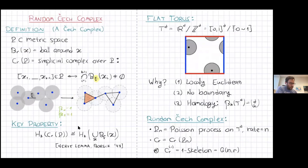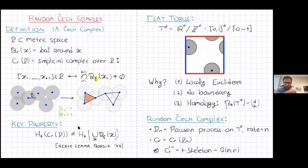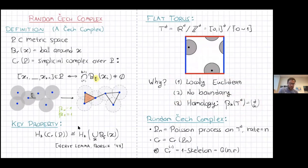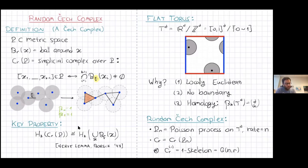We generate a Poisson process on this torus with rate n, build the Čech complex from the random points, and note that the one-dimensional skeleton of this object is the geometric random graph I showed before — so this is a generalization of the random geometric graph. This second object will be the focus of the third talk on Wednesday.